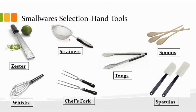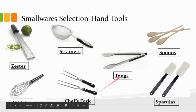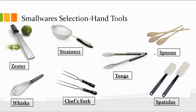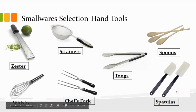This is a strainer, also known as a mesh strainer. Then you've got a whisk, chef's fork, tongs. This right here is a locking device on the tongs — you close them, pull that up, and that should lock them into place. Wooden spoons, and then spatulas — people also call these rubber scrapers. Either one is fine.